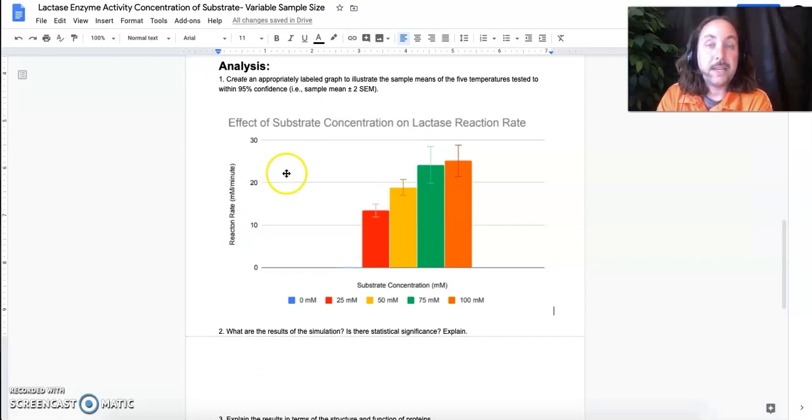It has a well labeled title, it has a legend, the X and the Y axis are well labeled. I would like this to say millimoles of glucose produced per minute, that would be a bit more accurate, but we have error bars and they represent two standard error of the means, not just the one standard error of the mean that you calculated, but double of that.